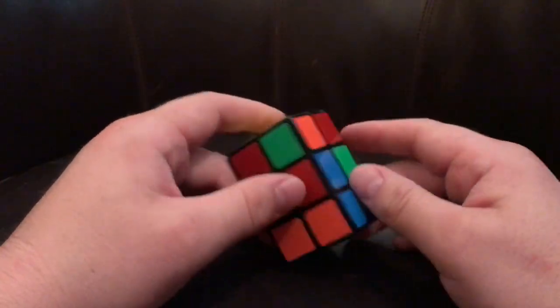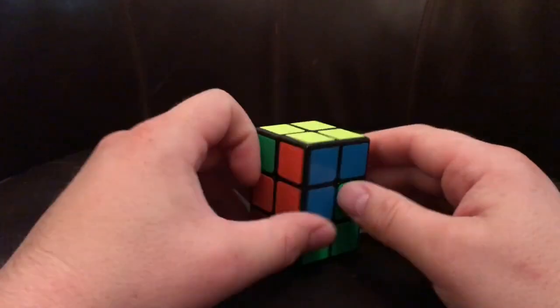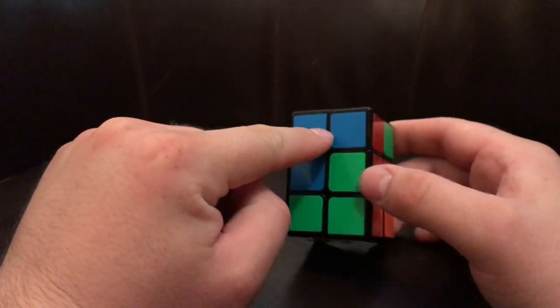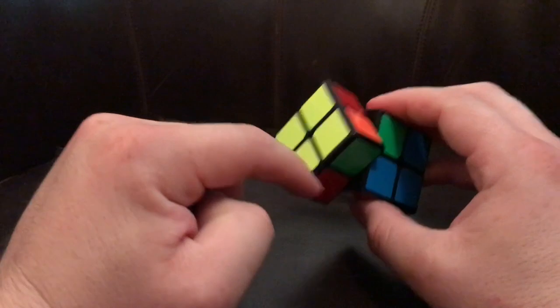So in this case, since we have a solved bottom, we don't need to worry about that. So we'll just do the solved top. Or we'll do the bottom part. In this case, I have one solved side. In some cases, you'll have no edge solved. And in this case, I have all my edges solved.